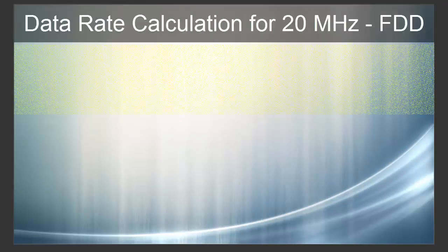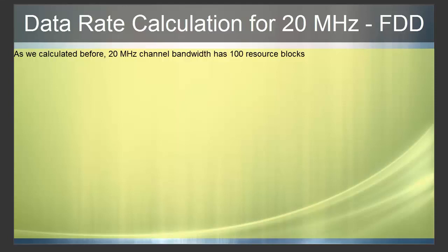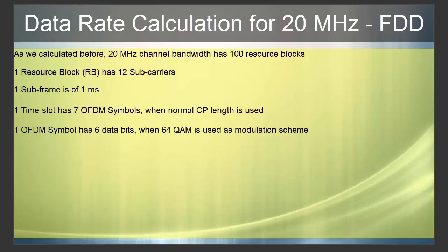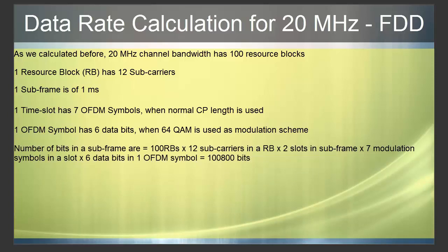Now let's calculate downlink and uplink data rate for 20 MHz bandwidth. As calculated before, 20 MHz channel bandwidth has 100 resource blocks. One resource block has 12 subcarriers. One subframe is 1 millisecond. One time slot has 7 OFDM symbols when normal cyclic prefix is used. One OFDM symbol carries 6 data bits when 64QAM is used. Therefore, number of bits in a subframe = 100 RBs × 12 subcarriers × 2 slots × 7 symbols × 6 bits = 100,800 bits.